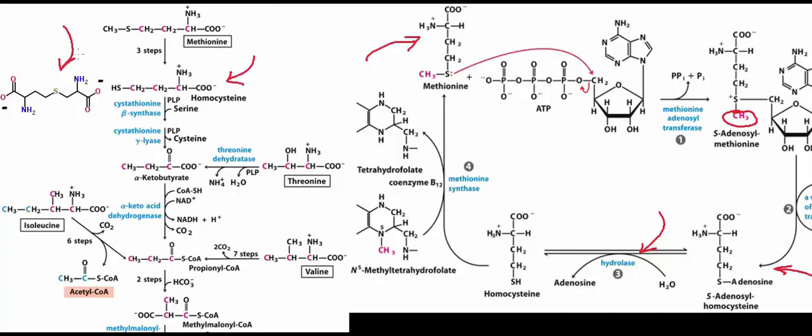Cystathionine is quickly consumed by cystathionine gamma lyase, a pyridoxal phosphate-dependent enzyme that kicks off cysteine, and we get alpha-ketobutyrate. Just as with cystathionine beta synthase, there is also a cystathionine beta lyase — make sure you can distinguish between the two when you get to biosynthesis. Cystathionine gamma lyase ultimately converts cystathionine to cysteine and alpha-ketobutyrate.